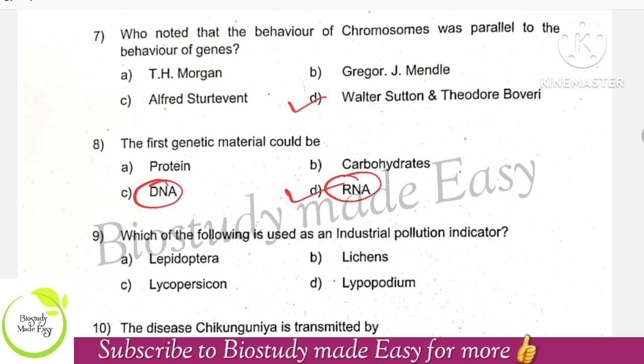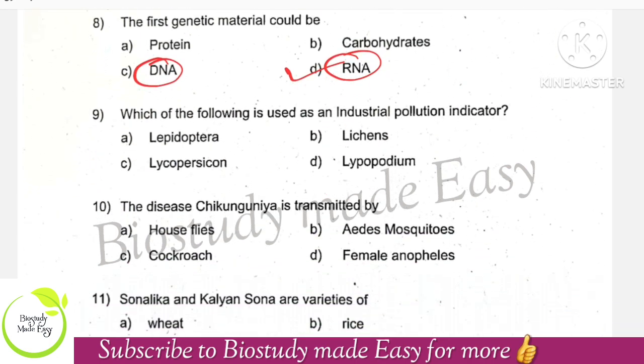The first genetic material was RNA. Through evolution, organisms found DNA more stable, and so DNA became the genetic material.